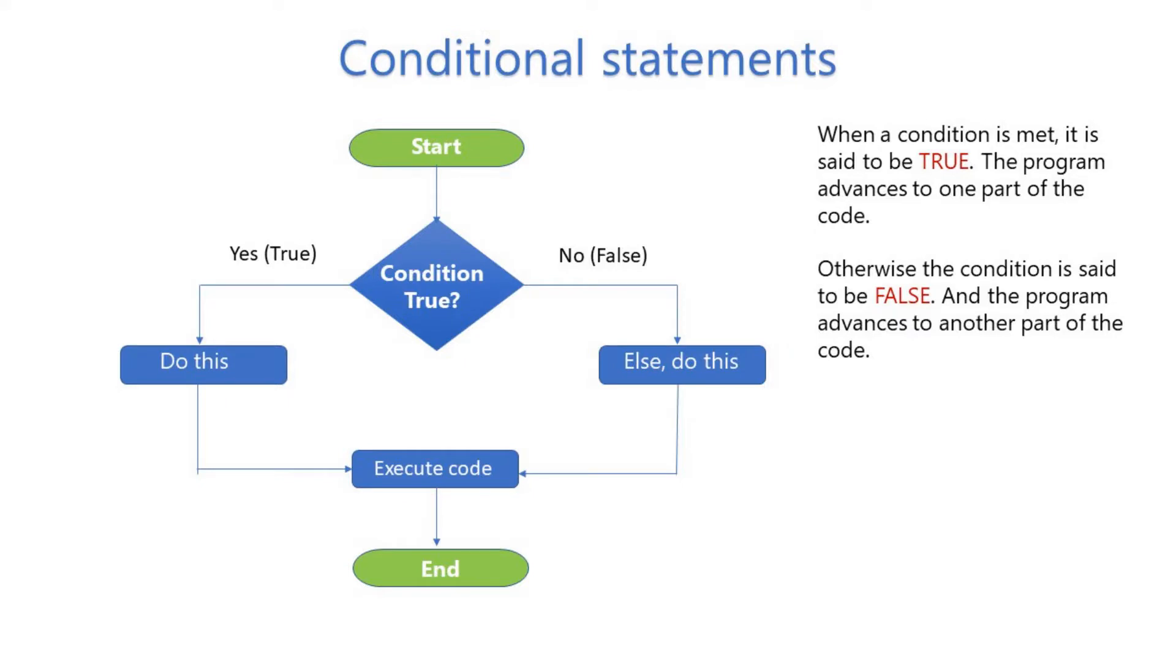Conditional statements. When a condition is met, it is said to be true. The program advances to one part of the code. Otherwise, the condition is said to be false, and the program advances to another part of the code.